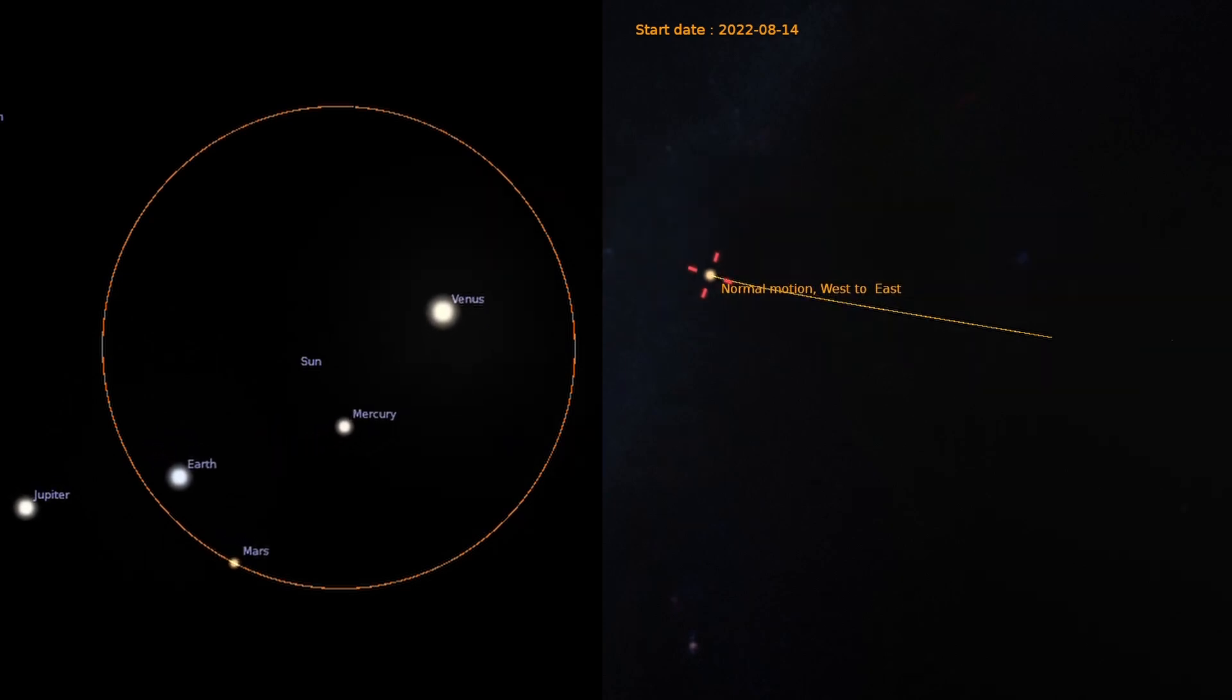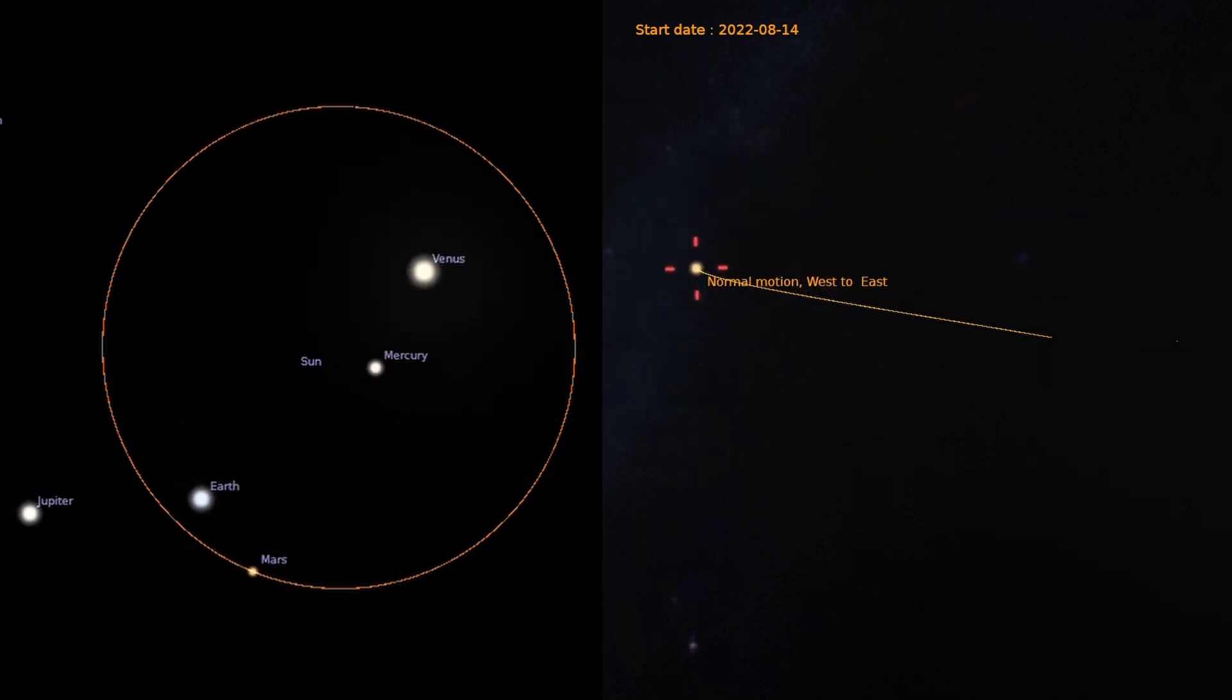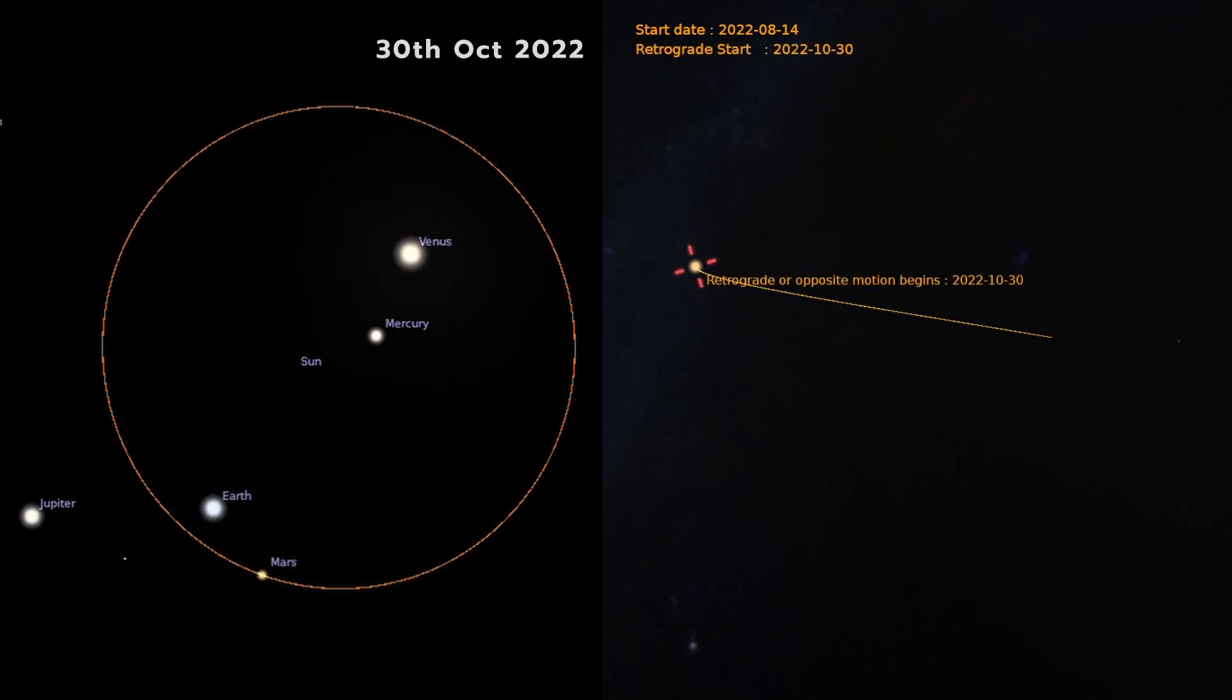But from 30th of October 2022, Mars' position from night to night seems to change direction and moves from east to west.